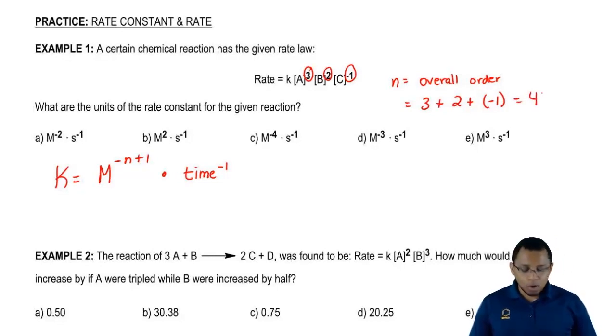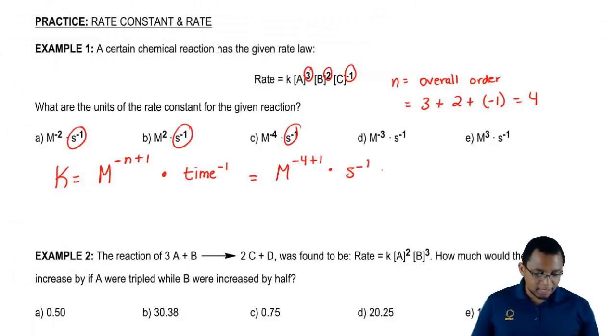N here equals 4. We're going to plug that in. M to the negative 4 plus 1 times, here all the units of time are in seconds inverse, so we'll just use times second inverse.